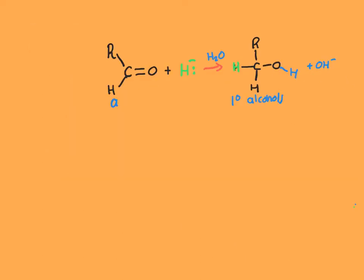To summarise: aldehydes, when they undergo reduction with sodium borohydride, produce primary alcohols. And remember, primary alcohols, when they undergo the opposite of reduction — oxidation — can be oxidised. The oxidising agent is acidified potassium dichromate. So aldehydes get reduced to primary alcohols, and primary alcohols get oxidised back to aldehydes.